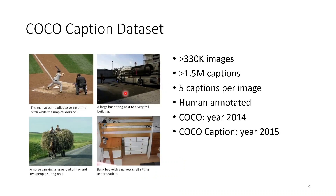There are four sample images, and given each image we see a caption. Those captions are human-made, so the quality is very high. The COCO dataset was released in 2014 as an object detection and segmentation dataset. One year later, other researchers added more captions. As a result, there are more than 330K images and more than 1.1 million captions. On average, each image has five captions.